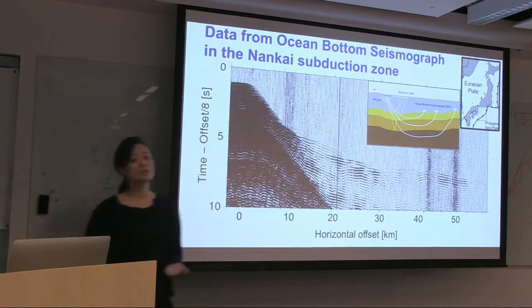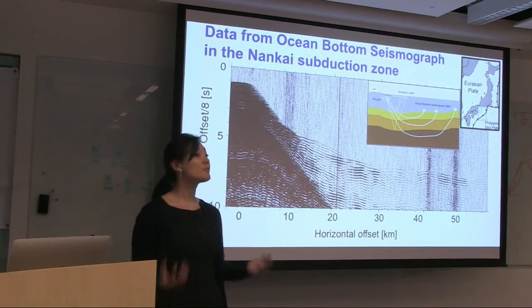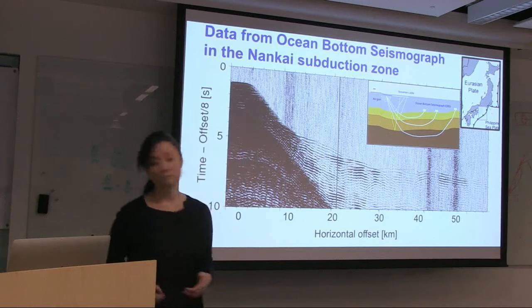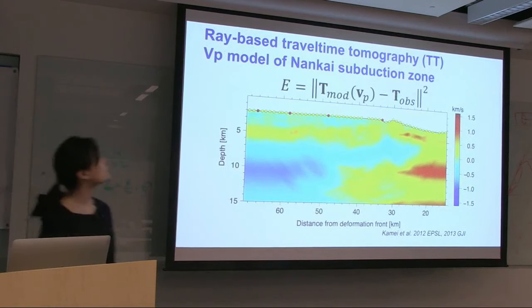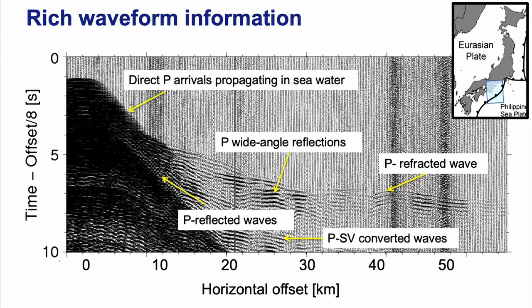What we do with this data: the simplest approach is to use when the wave arrives to determine how fast it travels in the earth — that is travel time tomography. The objective function is the difference between the observed travel time and the travel time from your model. By iteratively updating, you get a structure where the subducting plate is visible coming from right to left. That is the information when we use just one point of the data.